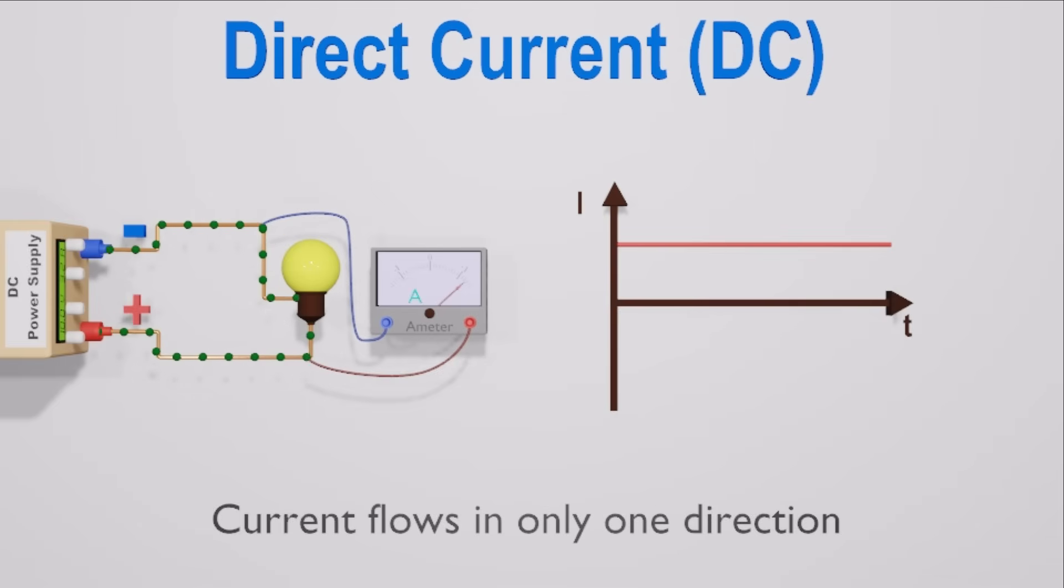DC powers appliances with delicate electronic circuits that require a simple and steady current flowing in one direction. Nowadays, this type of current powers cell phones, computers, and most other electronics. And the current obtained from batteries, solar cells, etc.